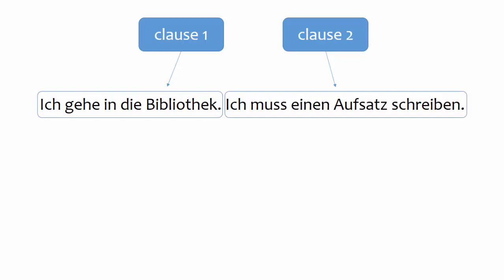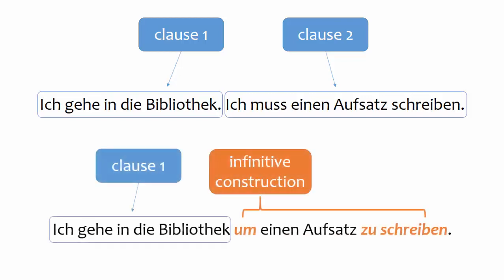The same is true in German. At the top of your screen, you see two independent clauses. You can use an infinitive construction to connect them. The infinitive construction shows the relationship between the first clause and the second — and that's the reason to use infinitive constructions: to complete a thought or to make clear the relationship between two ideas.